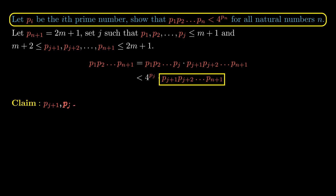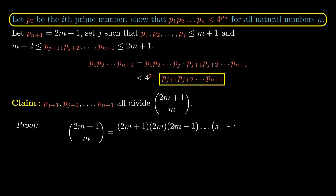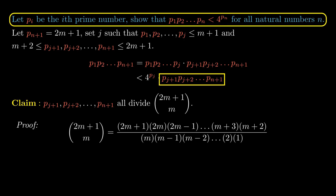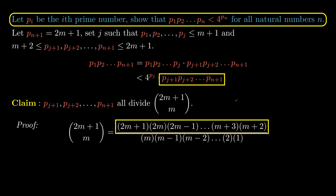I claim that the primes p_{j+1}, p_{j+2}, …, p_{n+1}, which are greater than or equal to m+2 and less than or equal to 2m+1, must all divide the value C(2m+1, m). To prove this, notice that C(2m+1, m) can be written with the numerator as a descending product of m terms and m! in the denominator. The terms in the descending product start at 2m+1 and end at m+2 — exactly the bounds of the primes p_{j+1} to p_{n+1} — so they must be contained somewhere in the descending product.